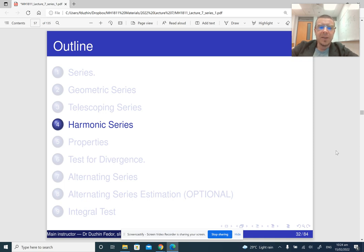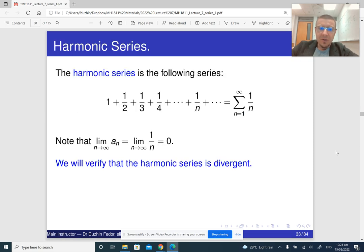All right, the next topic is the so-called harmonic series. The harmonic series is a particular series whose entries are just 1 over n. Notice that the limit of its entries is just 0, and it is famous because even though its entries approach 0, it is still nevertheless divergent.